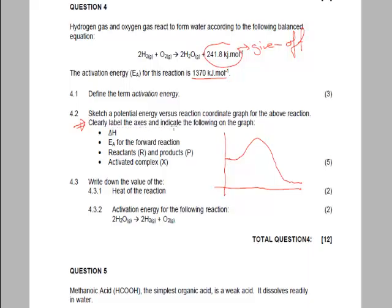So it says sketch your potential energy versus reaction coordinate. Clearly label the axes and indicate the following on the graph: ΔH, Eₐ, reactants and products, and the activated complex. Okay, so this is obviously your potential energy in kilojoules per mole, and this is your reaction coordinate. You guys need to write these out properly. Now this is your reactant, and this is obviously your product, so there's reactants and products. And this obviously your activated complex. So this X is your activated complex.